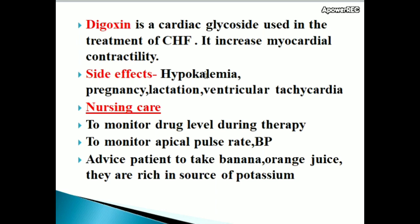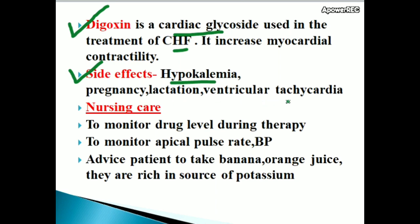Digoxin is a cardiac glycoside used in the treatment of congestive heart failure. It increases myocardial contractility. Side effects of digoxin administration include hypokalemia — that means decreased potassium level in the blood, less than 3.5 mEq per litre — as well as pregnancy concerns, lactation, and ventricular tachycardia.